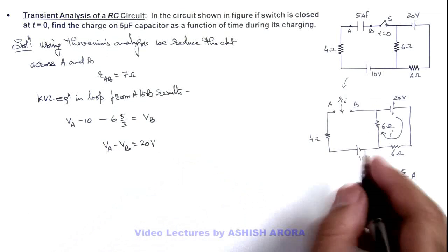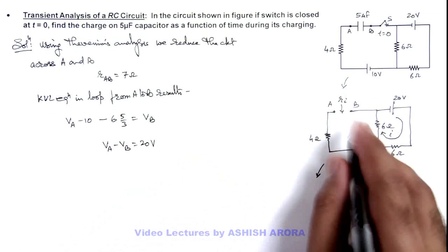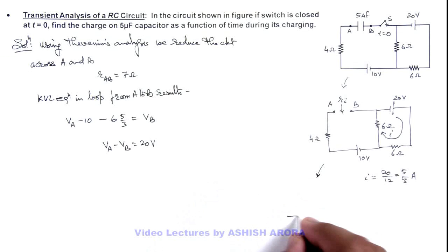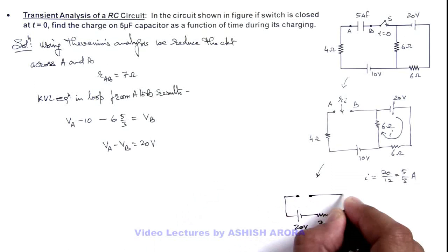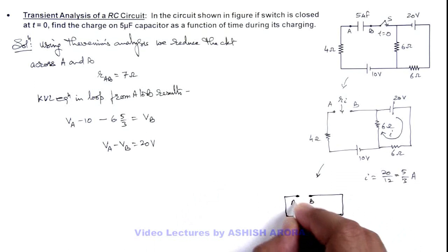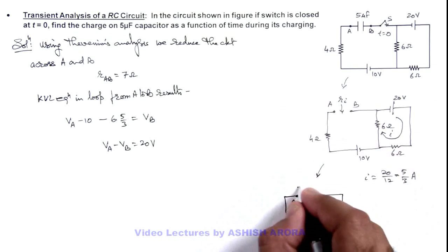So we can reduce this circuit by Thevenin's battery with V_A minus V_B = 20 volt, along with the 7 ohm resistance across terminals A and B, where we reconnect the capacitor which was 5 microfarad.